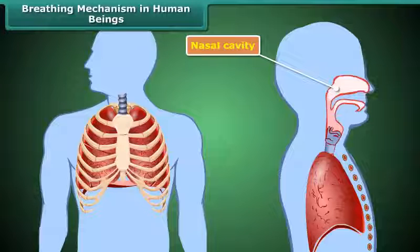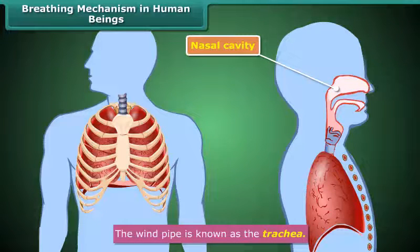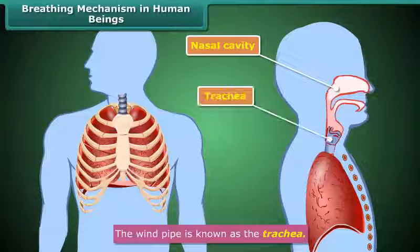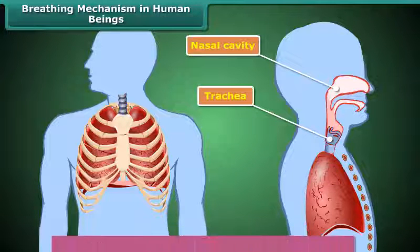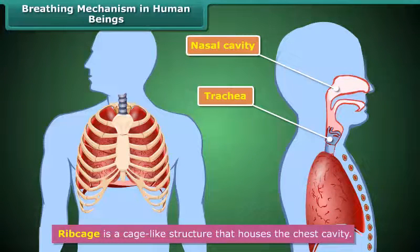From the nasal cavity, the inhaled air passes down the throat and enters the windpipe known as the trachea. From the trachea, it reaches both our lungs, which are present in the chest cavity. This cavity is surrounded by ribs on both sides.